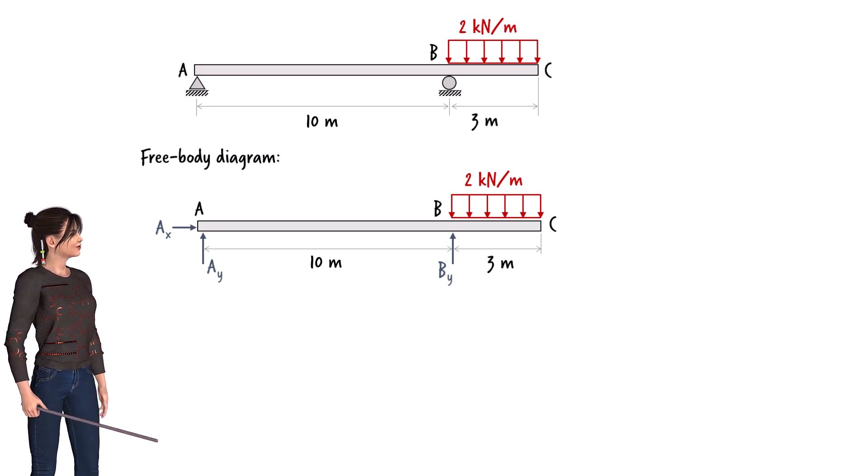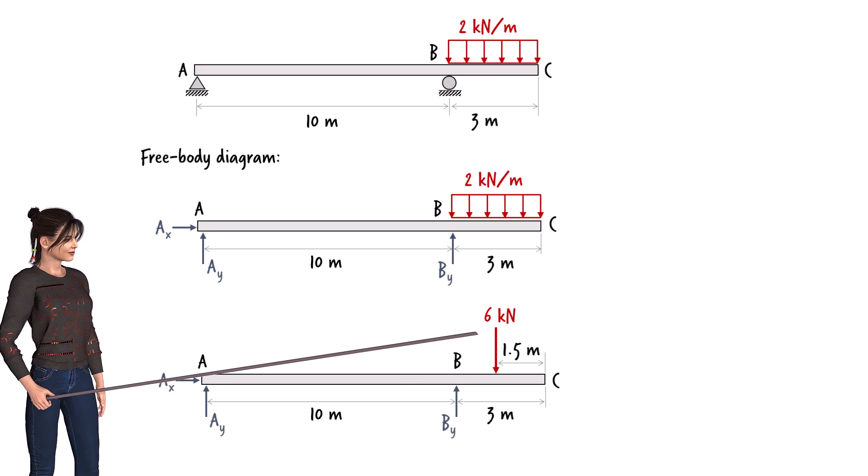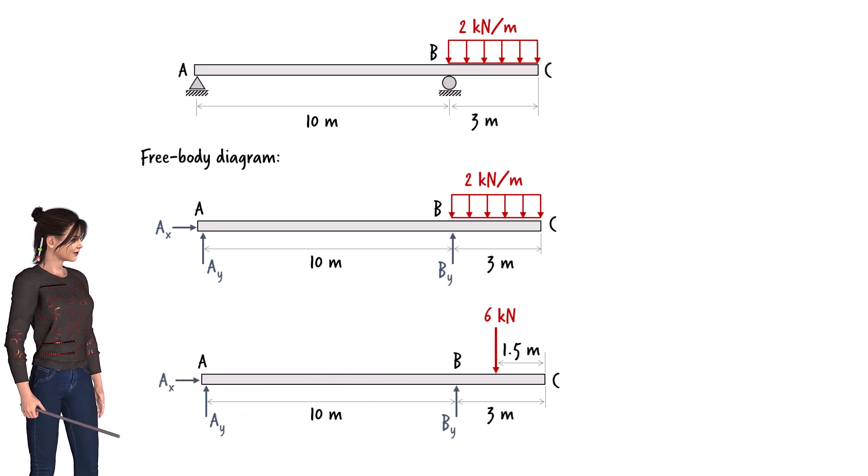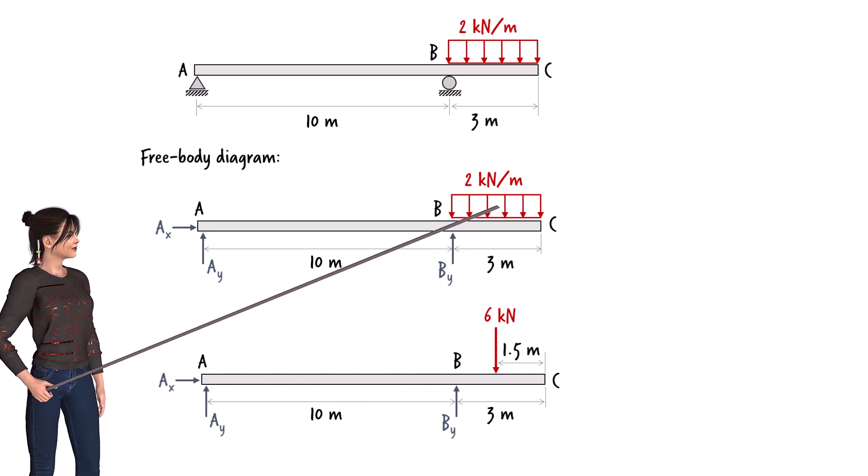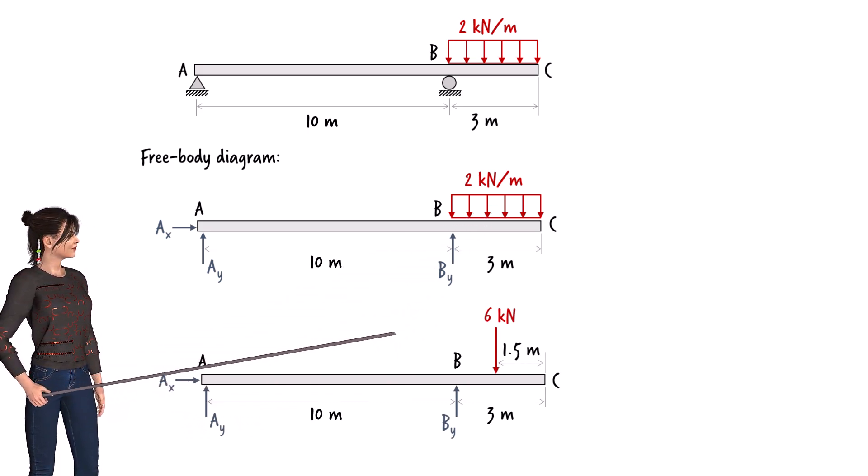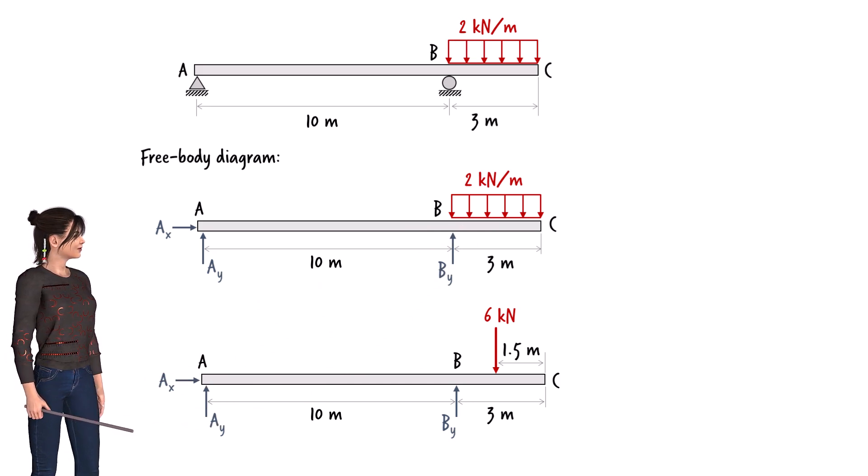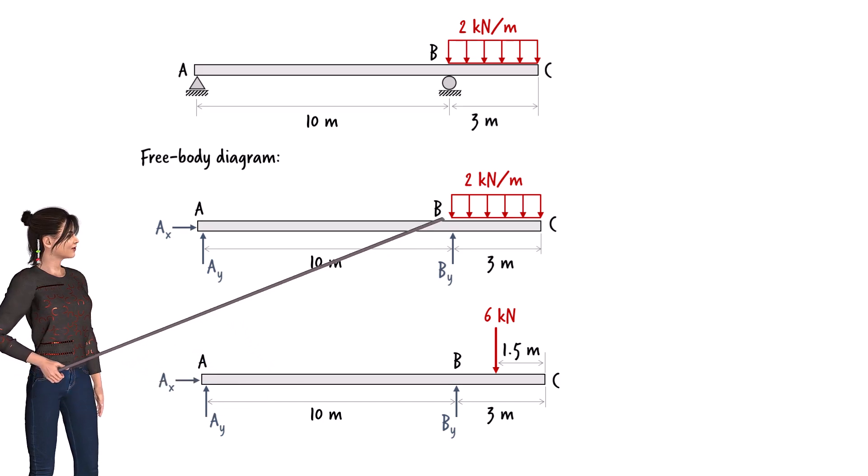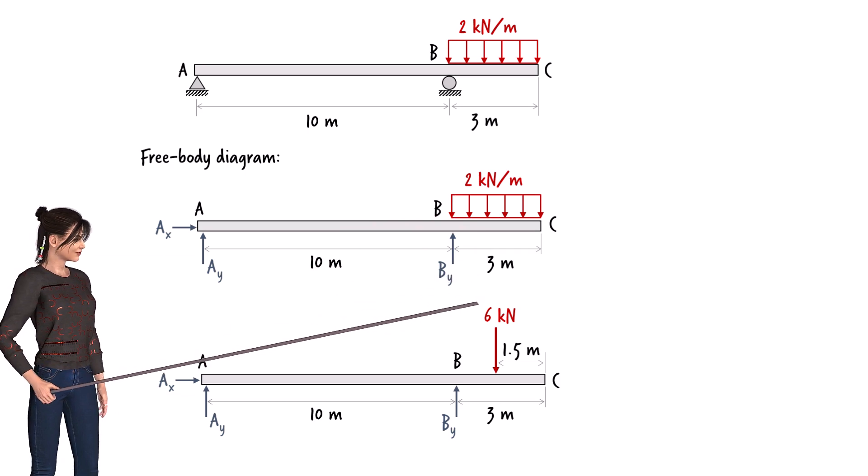We can replace the distributed load with its equivalent point load to calculate the support reactions. As you can see, the point load's magnitude equals the area of this rectangle. Since the rectangle has a height of 2 and a base of 3, the equivalent point load has a magnitude of 6 kN. 2 kN per meter times 3 meters yields 6 kN.